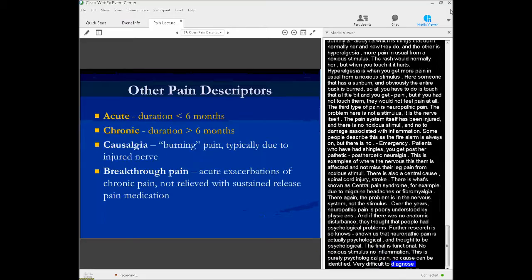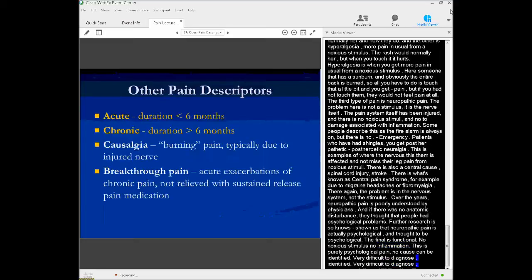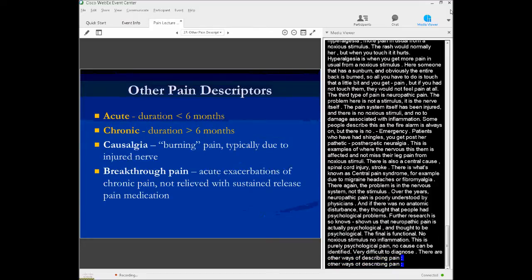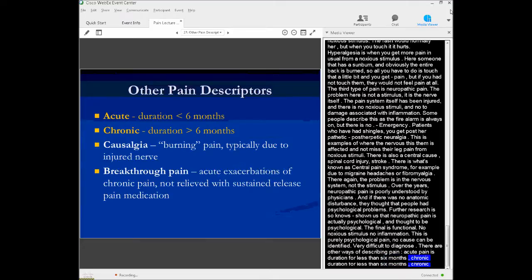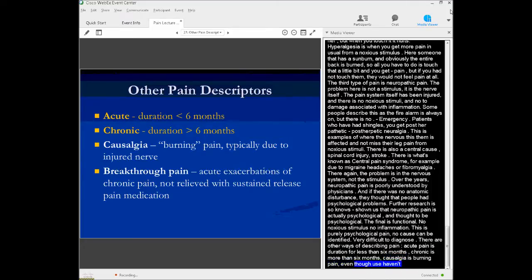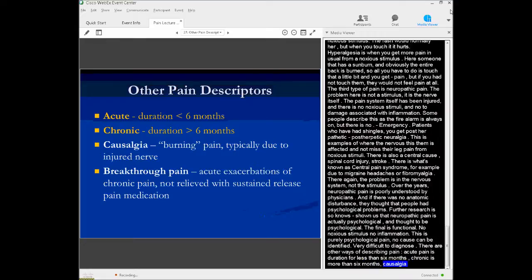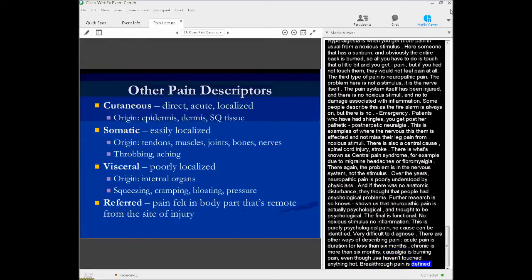So there's other ways of describing pain. Acute pain is generally defined as pain with duration of less than six months, whereas chronic is when it's more than six months. Causalgia is a term that we use for burning pain when you sense something that is burning, even though you haven't touched anything hot. Now, breakthrough pain is defined as acute exacerbations of chronic pain, not relieved with the usual long-term sustained release medications.